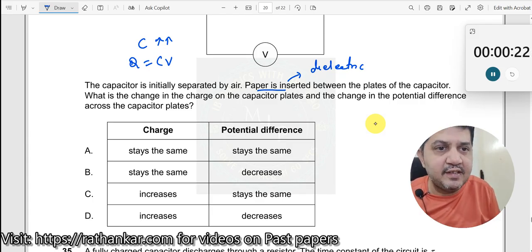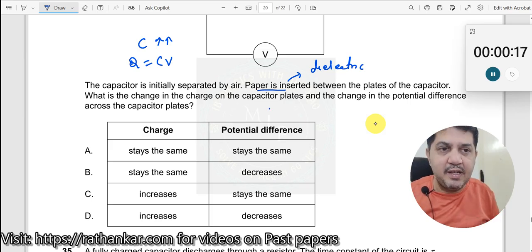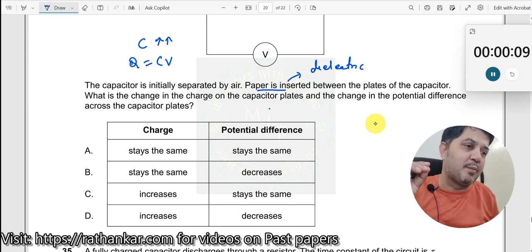Then, what is the change in charge on the capacitor plates? Immediately don't assume Q is increasing. No, that's not the right answer. Because I only say the capacitance of the capacitor will increase. You can hold more amount of charge, but it doesn't mean that I have added more amount of charge.